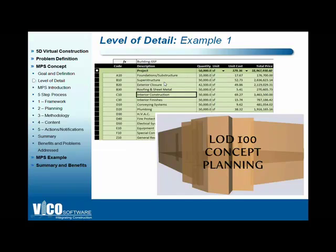This is a cost plan and a model for level of detail 100. LOD 100 is used for concept planning, meaning we know the footprint of the building and the number of floors, so we represent the building as a stack of boxes giving the total square footage. That number is used as input for a cost estimate using average cost per square foot of similar projects, resulting in an LOD 100 cost plan.